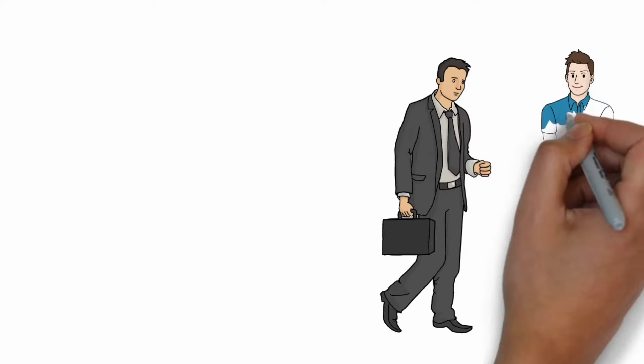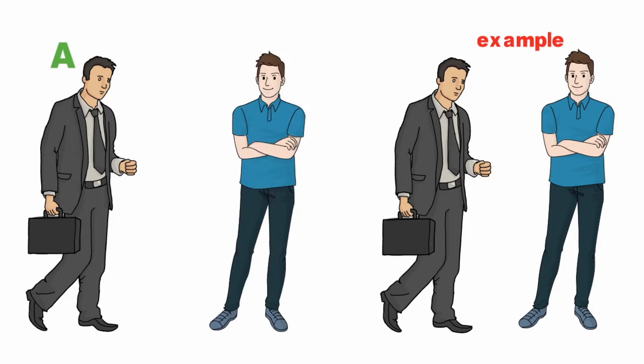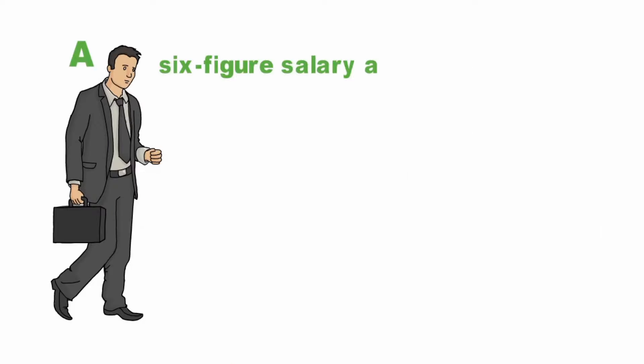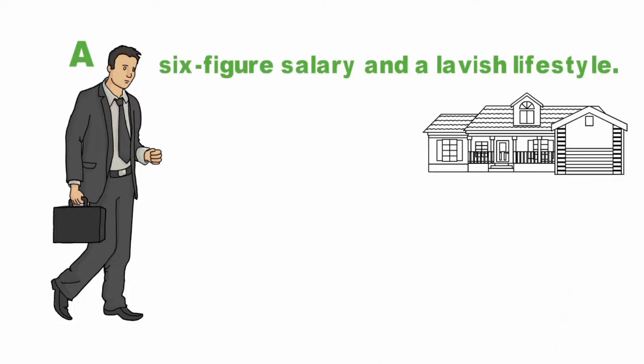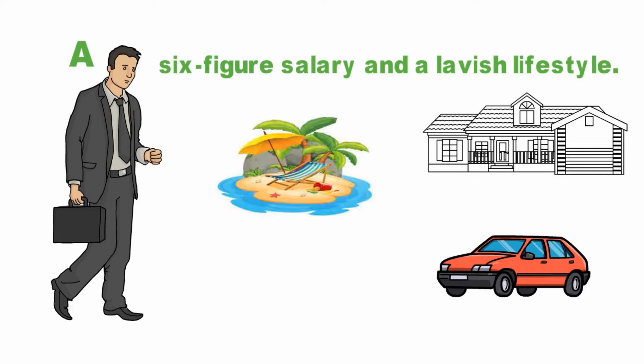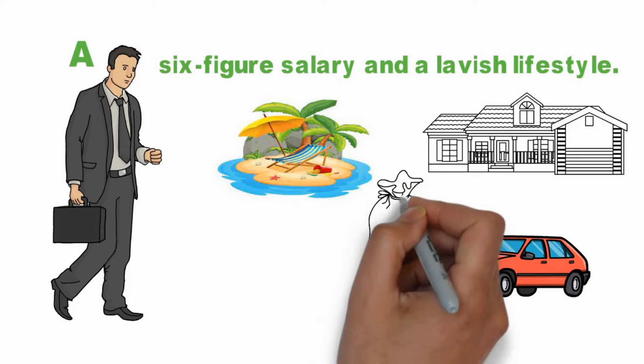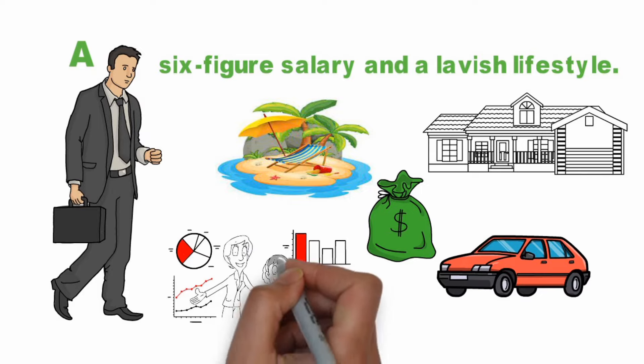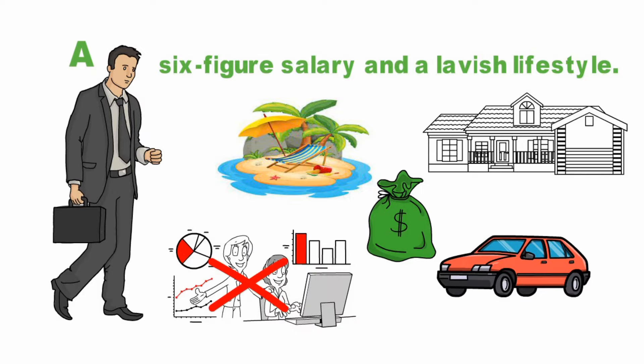Let's see an example of the difference between being rich and wealthy. Consider two individuals, Person A and Person B. Person A is a successful executive with a six-figure salary and a lavish lifestyle. He lives in a luxurious home, drives flashy cars, and goes on exotic vacations every year. He has some retirement savings through his employer's plan, but he does not prioritize investing in the stock market or other assets that can generate passive income.